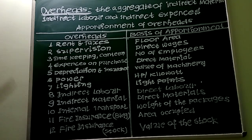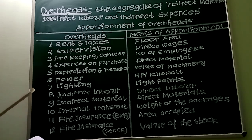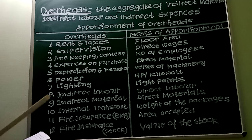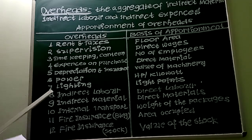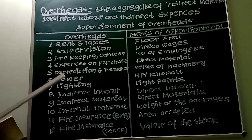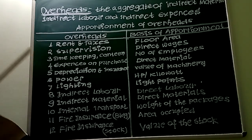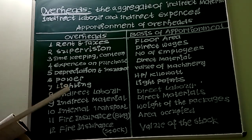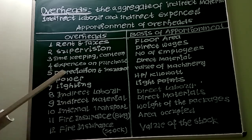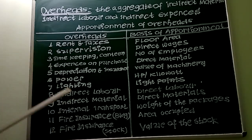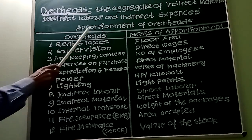Certain items of cost cannot be identified with any particular cost centres or cost units. Such items cannot be allocated; rather, they have to be apportioned to the various cost centres or cost units by using some suitable basis.